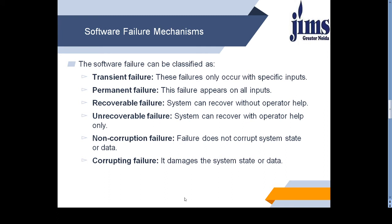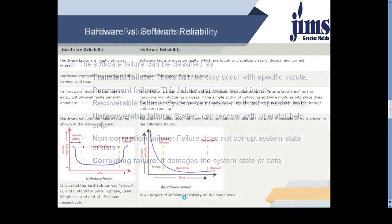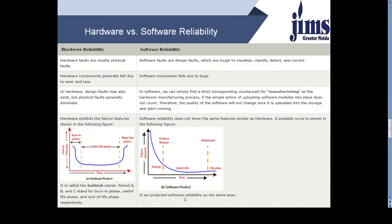Non-corruption failures — failure does not corrupt system state or data. Corrupting failure — it damages the system state or data. Hardware and software reliability is a very important topic. Hardware faults are mostly physical faults. Software faults are design faults which are tough to visualize, classify, detect and correct.